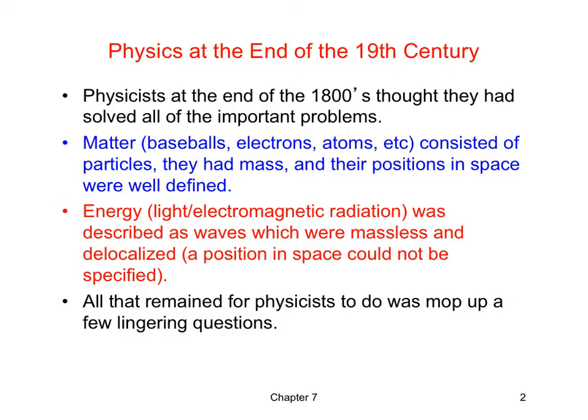I showed this slide in a previous video. At the end of the 1800s, physicists basically thought they had everything figured out. And as part of their understanding of the universe, things were sort of divided into two categories. We had matter and energy.